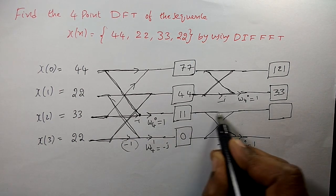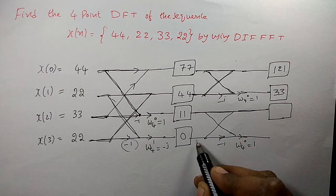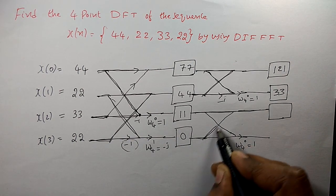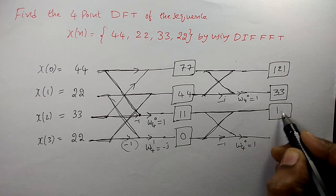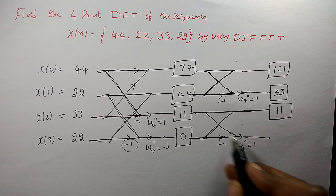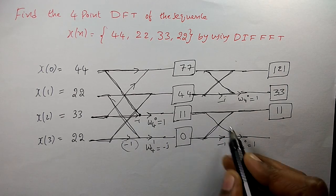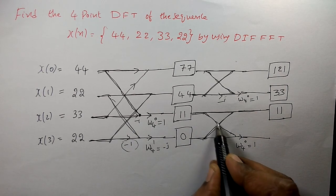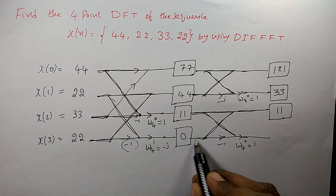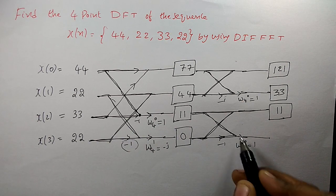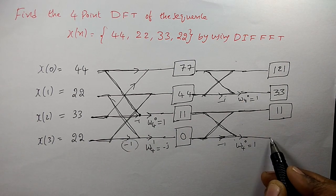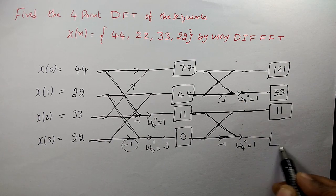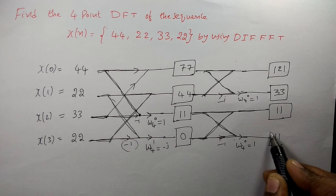For the lower branches of the last stage: 11 plus 0 is 11. And 11 minus 0 is 11, multiplied by Omega_4^0, which gives 11.